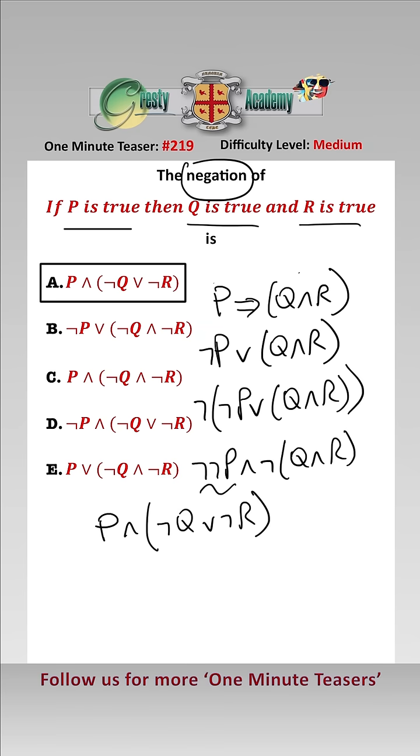Now, incidentally, if we wanted it in English, this is read as P and not Q or not R. Or P is true and Q is false or R is false.